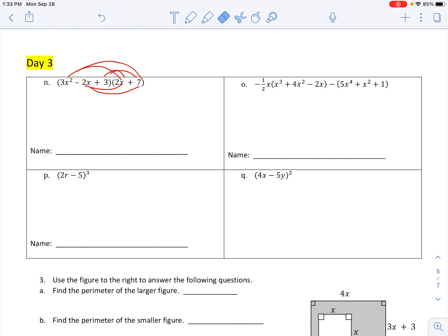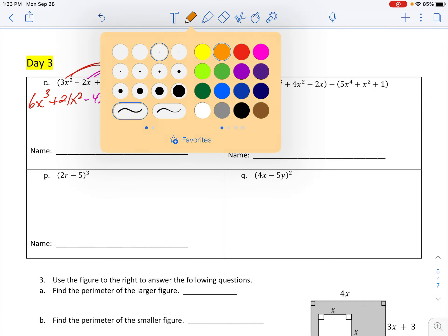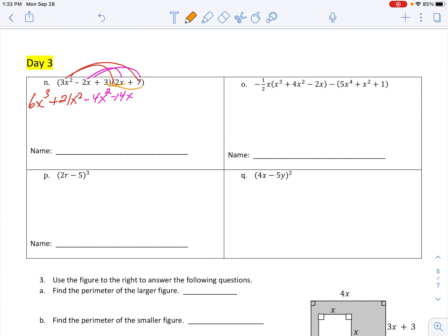So that's why I just like to say distribute. Take everything in the first one and multiply with everything in the second one. So distribute. Got a lot of multiplication going on, and it's easy to make some mistakes. So let's slowly go through there. 3x to the second and distribute it. 6x to the third plus 21x squared. And for the next term, distribute the negative 2x.